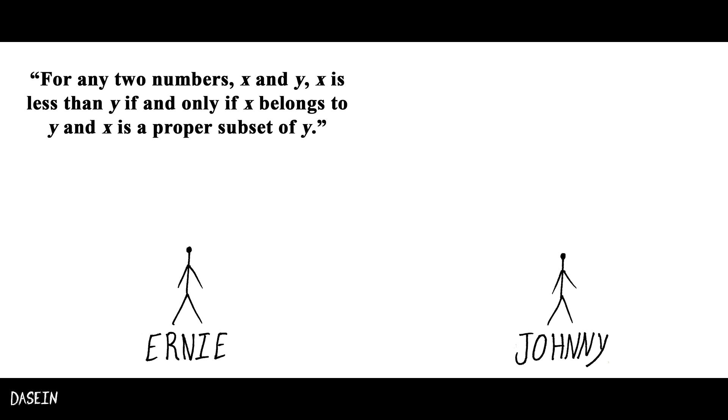Johnny's theorem states that given two numbers x and y, x belongs to y if and only if y is the successor of x. Strangely enough, the number 3 is something completely different for Ernie than it is for Johnny.